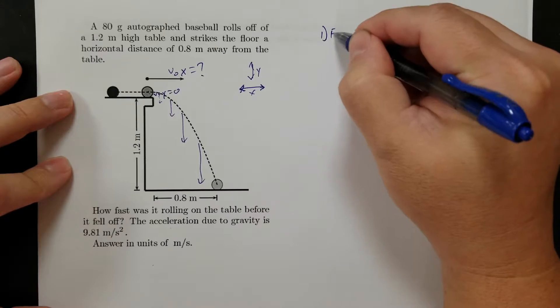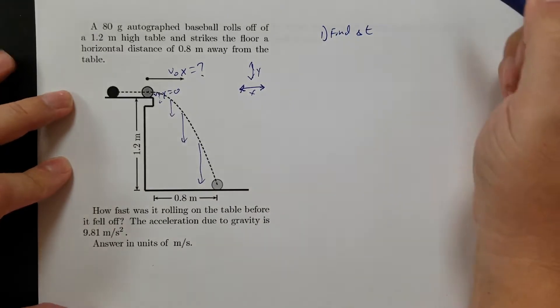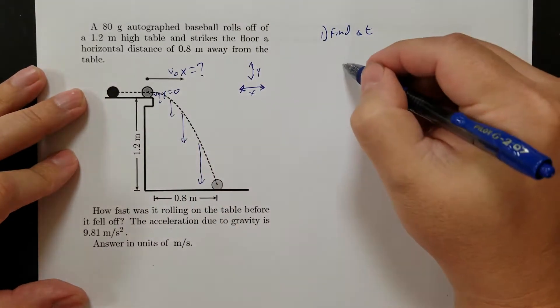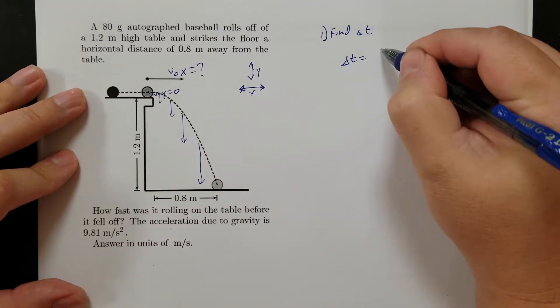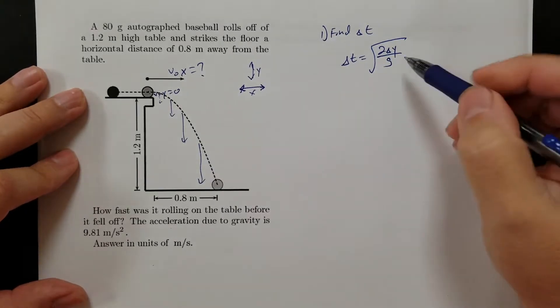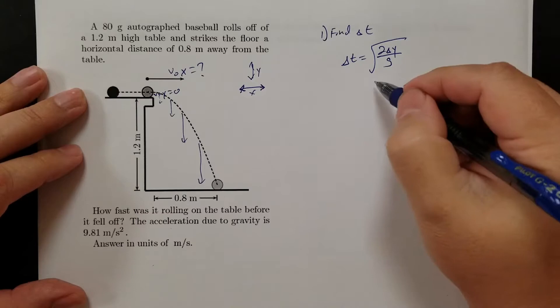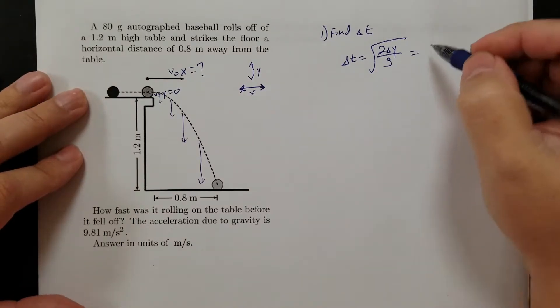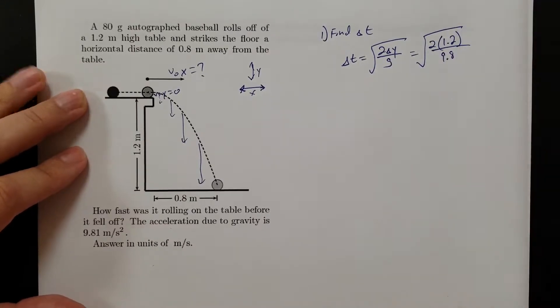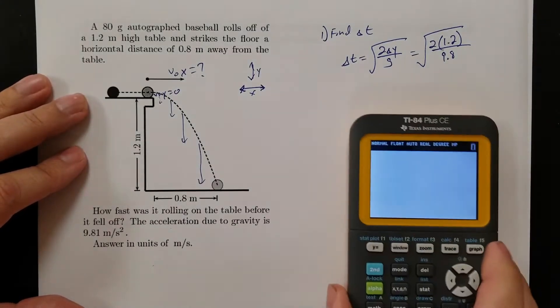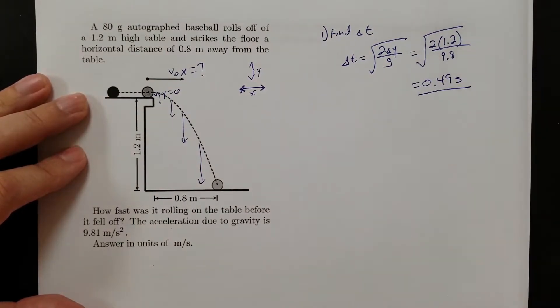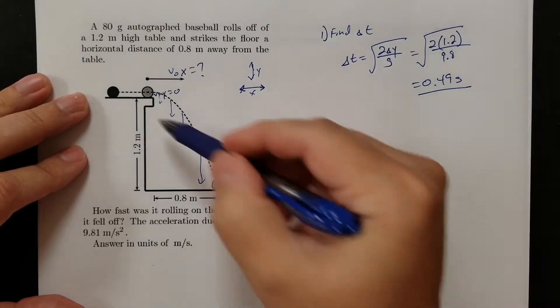Okay, so first step, always, we need to find the time. Any projectile problem, that's what you want to try to do first. So in this case, I know the height, and I know height is directly related to time through square root of 2 times the height divided by g. So the time is going to be 2 times 1.2 over 9.8, square root of that. So if I do that, I get 0.49 seconds. So that's the time it takes to fall.